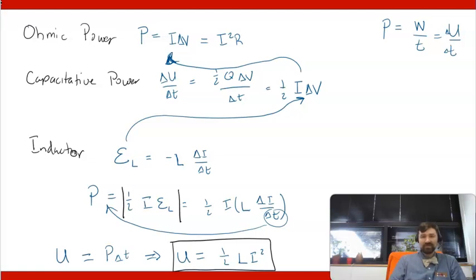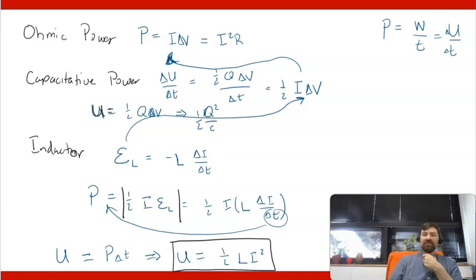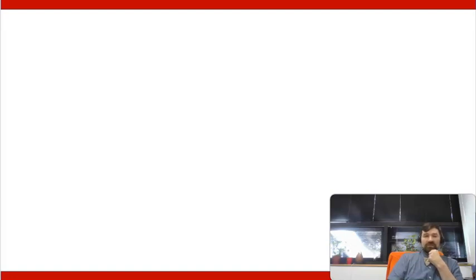So the energy is one-half L I squared. Just as for the capacitor we could rewrite its energy U from one-half Q Delta V into one-half Q squared over C, for the capacitor we're storing energy by charge scaled by one over capacitance. For the inductor we're storing it in current, scaled by one-half times the inductance L times current squared.